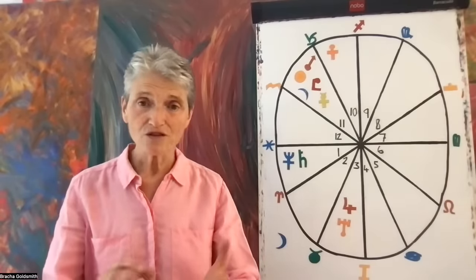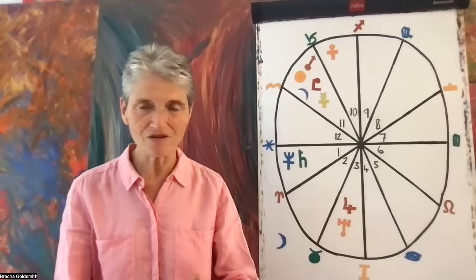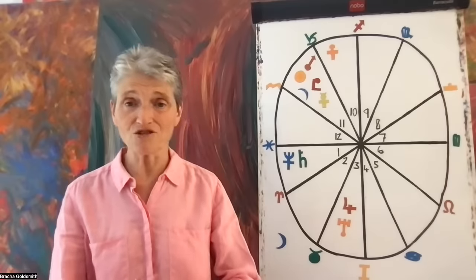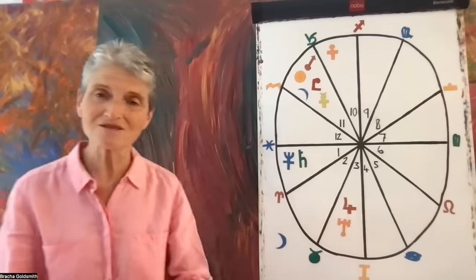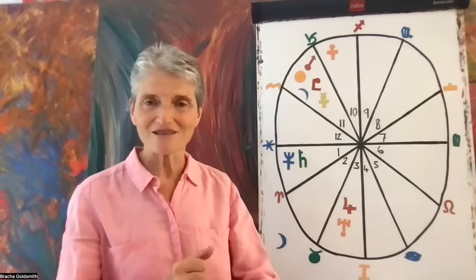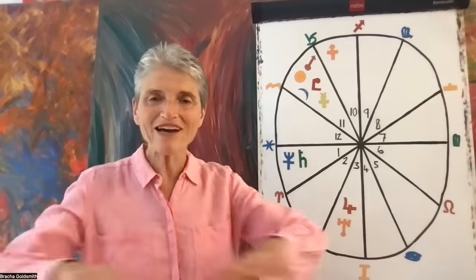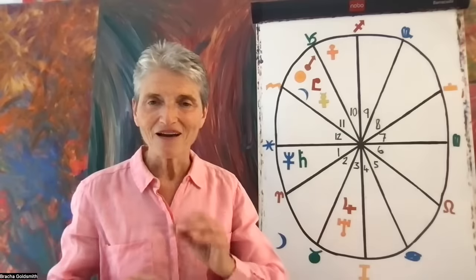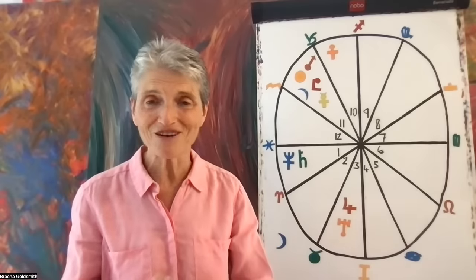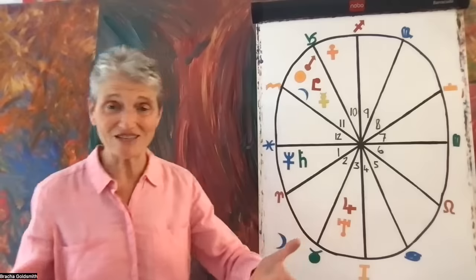The 11th house rules your friends, your social circle, the people who influence you and the people you influence. Communities, a sense of soul, a wider soul family, and also your dreams and wishes. So all these areas are activated.